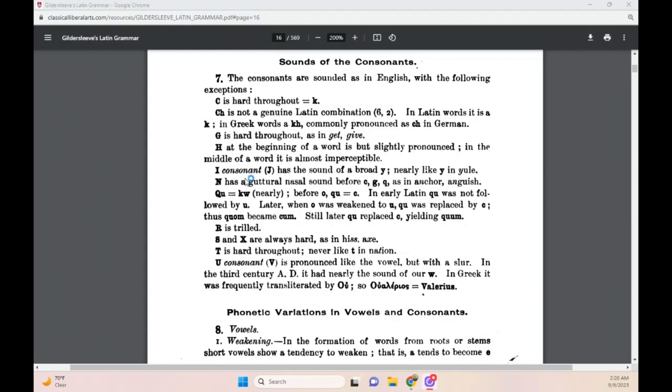The consonantal I, which is written with the letter that we call J, the consonantal I, has the sound of a broad Y in English, like Y in Yule, or yes. So the consonantal I almost becomes like the English Y. And in later Latin, at least, it's noted with the symbol that we call the letter J.